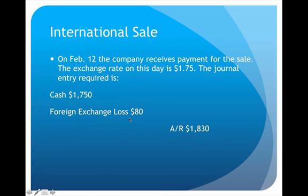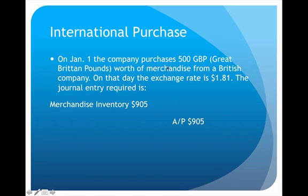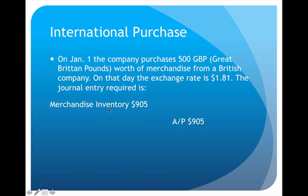This also affects us on purchases. In this example, we purchase merchandise from a British company for 500 pounds. On the day of the purchase the exchange rate is $1.81, so $1.81 times 500 equals $905. We debit merchandise inventory and credit accounts payable for $905.